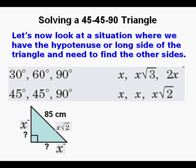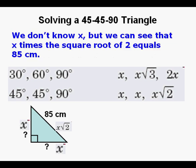Let's look at a situation where we have the hypotenuse or long side of the triangle and need to find the other sides. Here we have x√2 equals 85 centimeters. We don't know x but we can see that x times √2 equals 85 centimeters. So we set up the equation x√2 equals 85.